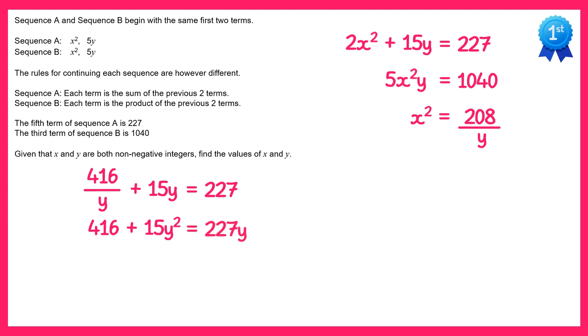So we have a quadratic. We're going to get all of the terms on the left, so if I subtract 227y from both sides I get 15y squared minus 227y plus 416 equals 0. Now believe it or not this quadratic will factorize. You get 15y take away 32 and for the second bracket y minus 13, and this equals 0.